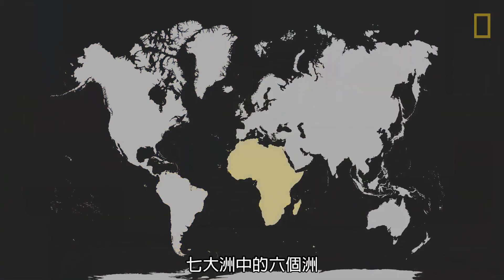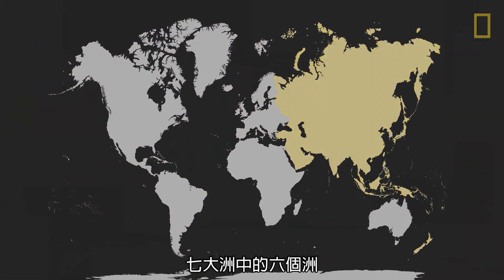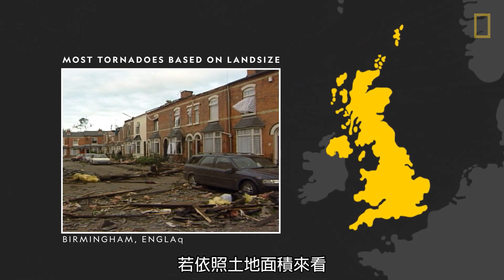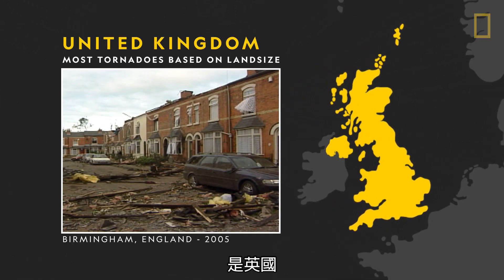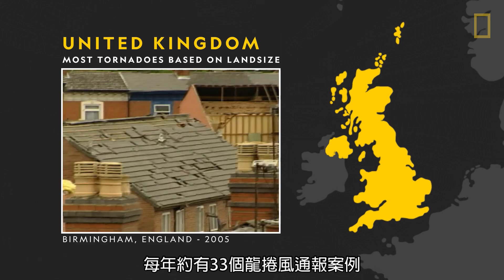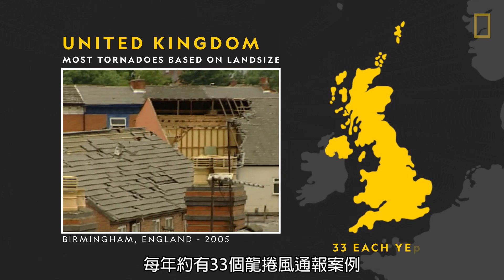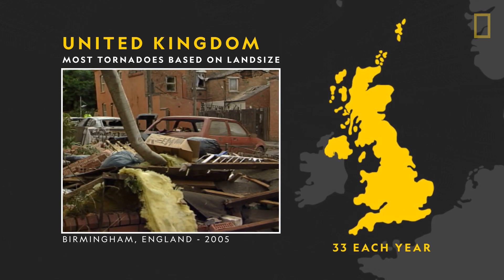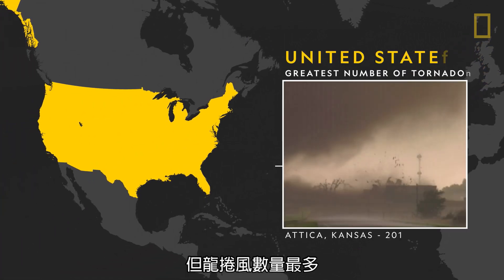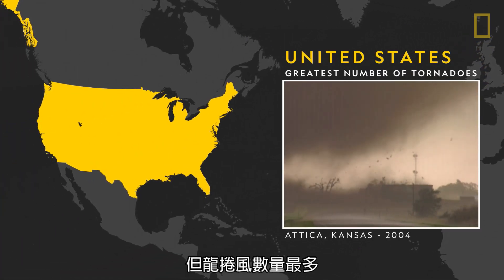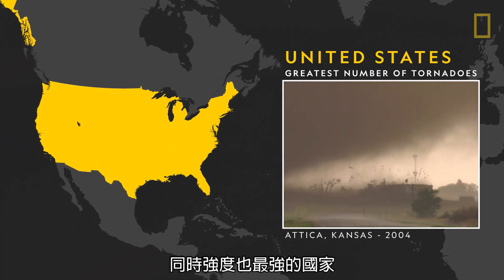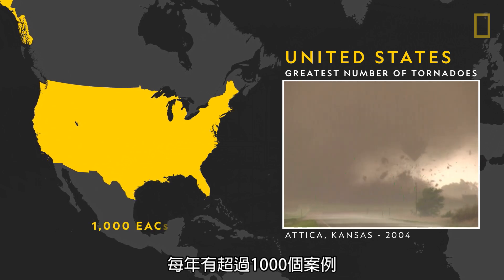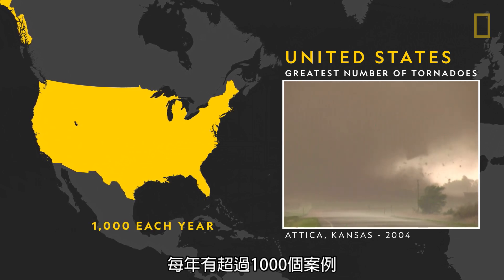Tornadoes occur on six of the seven continents. The country with the most tornadoes based on land size is the United Kingdom, with an average of about 33 tornadoes reported each year. But the country with the greatest overall number of tornadoes, and the most intense, is the United States, with over 1,000 reported annually.